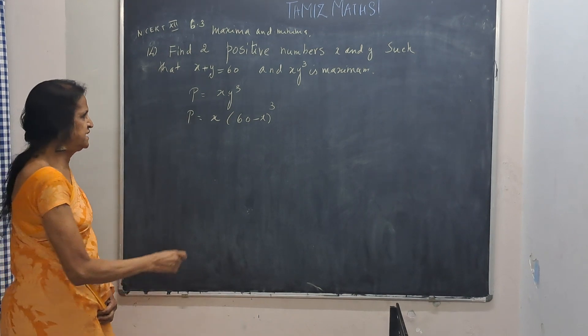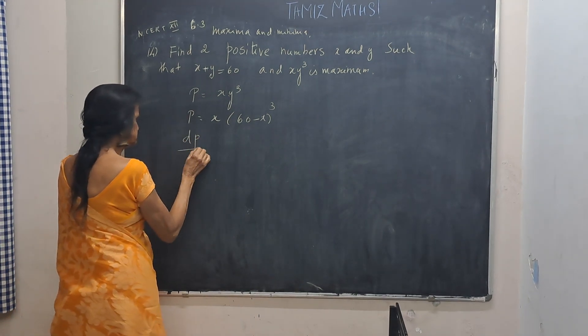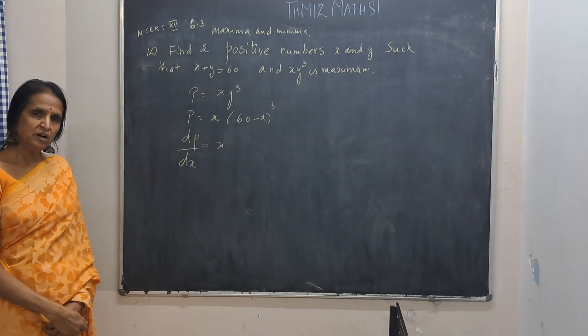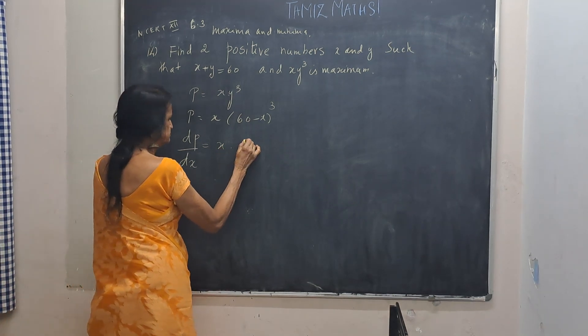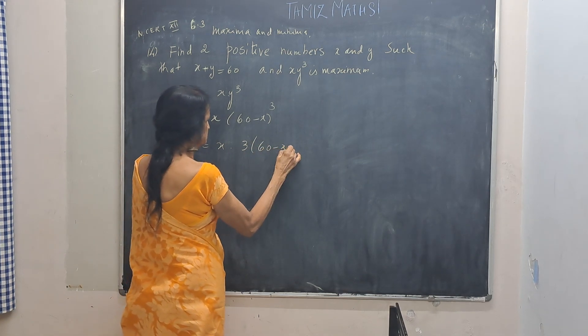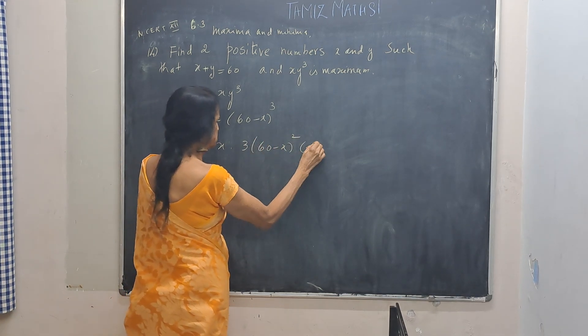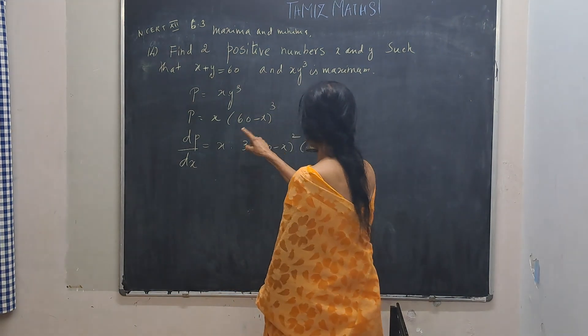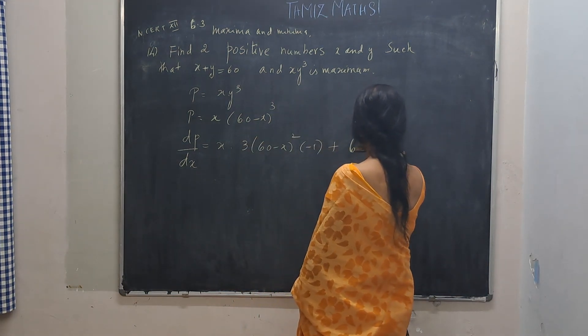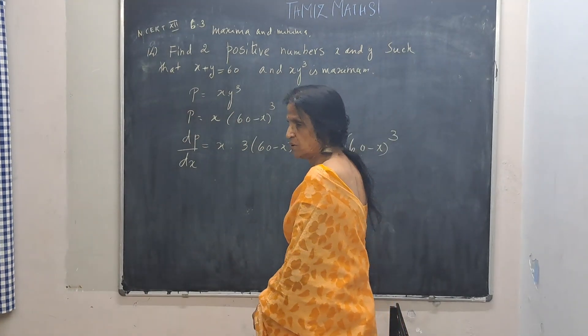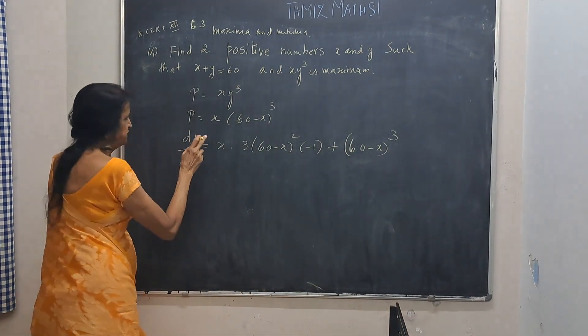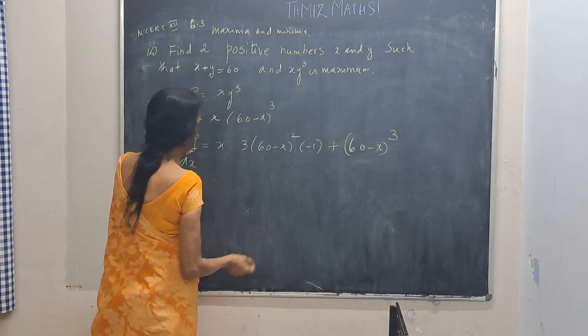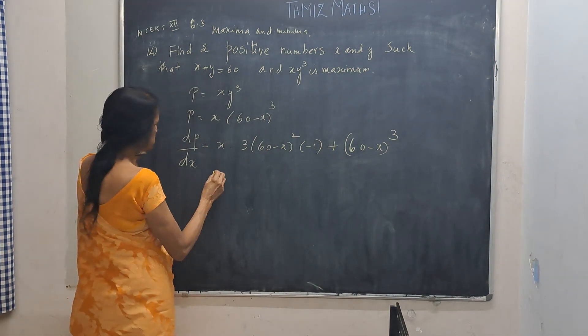Now we go for dP by dx. First function into derivative of the second function. Derivative of 60 minus x is minus 1, plus product rule I am using now. 60 minus x whole cube into derivative of x which will be 1. So P is x into 60 minus x whole cube. First function, derivative of second function, plus second function, derivative of first function will be 1.